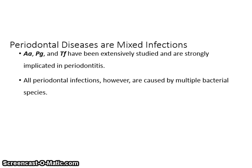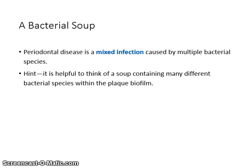Periodontal diseases are mixed infections. AA, PG, and TF have been extensively studied and are strongly implicated in periodontitis. All periodontal infections, however, are caused by multiple bacterial species. Since periodontal disease is a mixed infection, it is helpful to think of it as a soup containing many different bacterial species within the plaque biofilm.